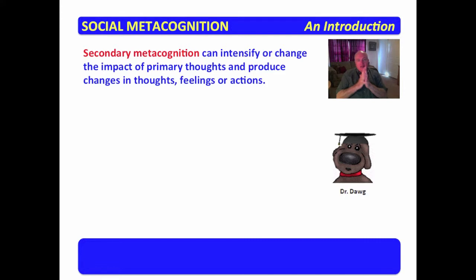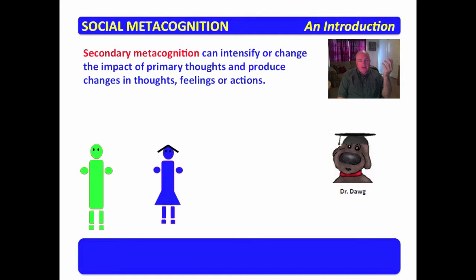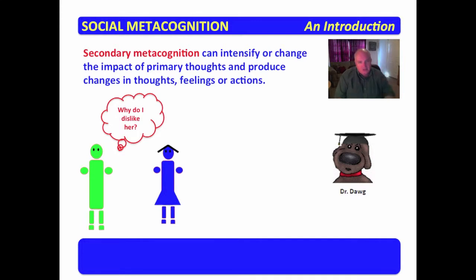Secondary metacognition can intensify or change the impact of primary thoughts and produce changes in thoughts, feelings, or actions. For example, the little green guy may evaluate or reflect upon his thoughts about the blue girl. Why do I dislike her? Have you ever met somebody that you just disliked the first time you met them? You begin to reflect upon it and think, well, why did I dislike them so much? That's secondary metacognition.